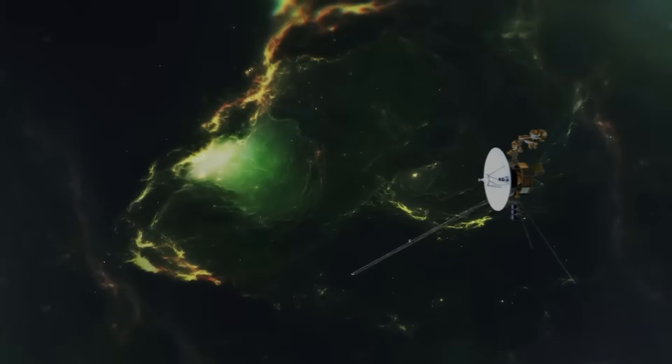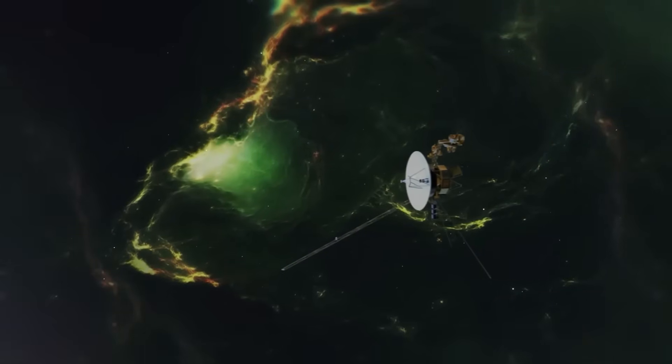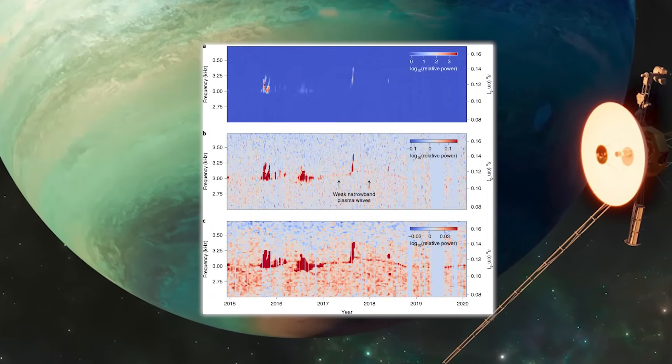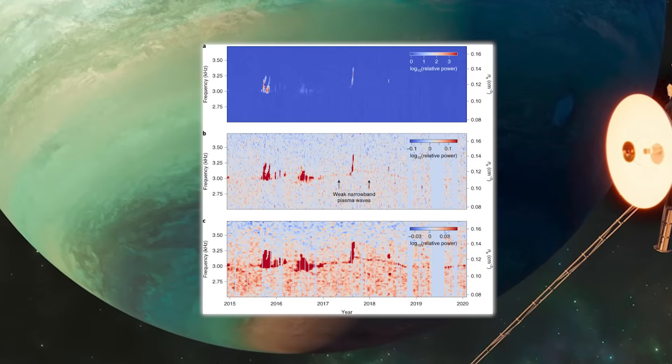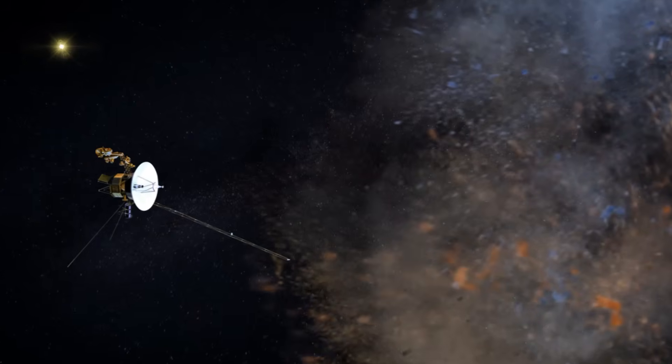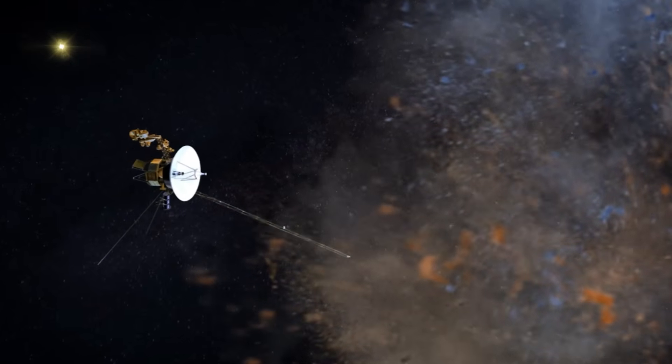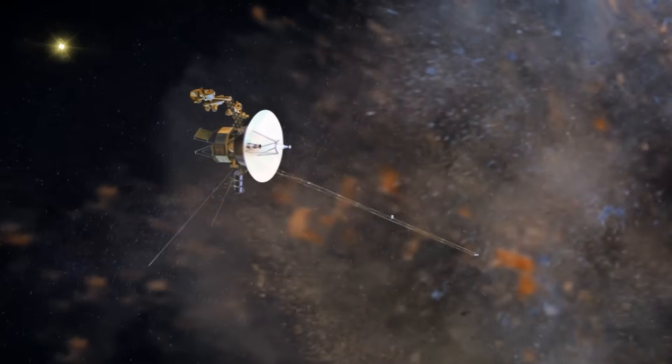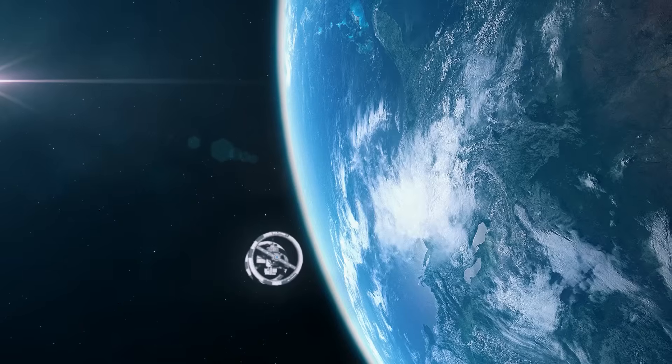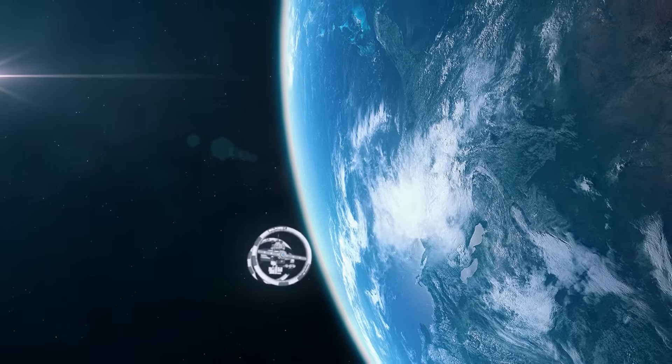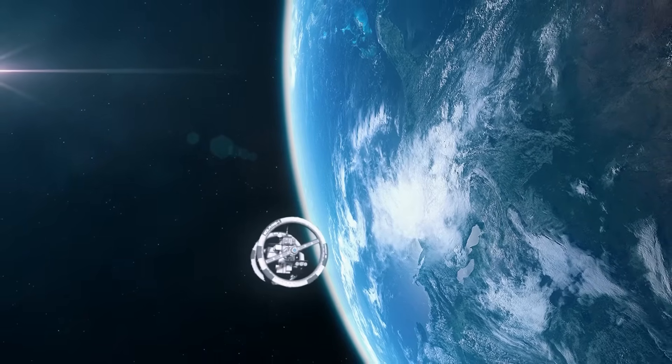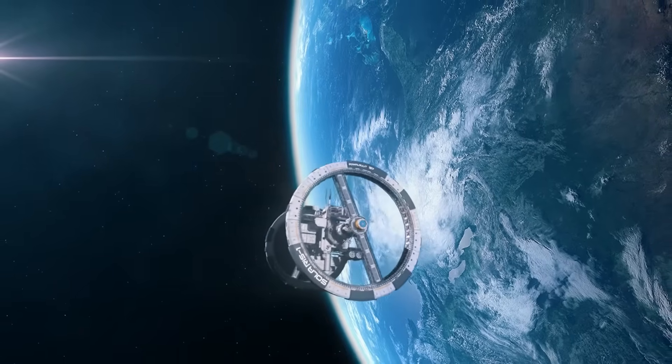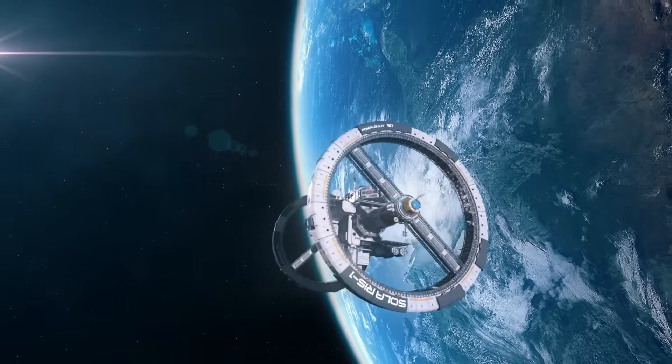The object's rotations changed subtly in response to Voyager's trajectory. Its surface panels reconfigured themselves in a slow kaleidoscopic shift, suggesting internal mechanisms at work, perhaps data processing, perhaps visual or energetic alignment. Even more extraordinary was the way in which Voyager's own power fluctuations appeared to be stabilized during the encounter. Instruments that had suffered degradation over the years briefly showed anomalous gains in performance, as though the object was emitting a field that temporarily reversed or bypassed some of the spacecraft's electronic wear.